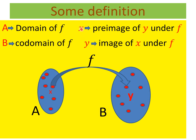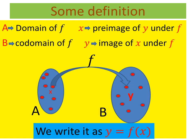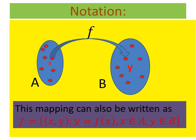The mapping is also written in the form y = f(x), where X is the pre-image and Y is the image. X is an arbitrary element of A and Y is the image of X. This mapping can also be written as a collection of ordered pairs where the first component belongs to A and the second component Y = f(x) belongs to B.